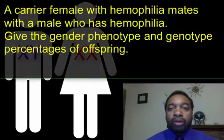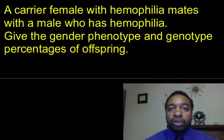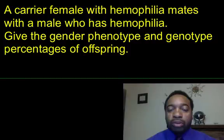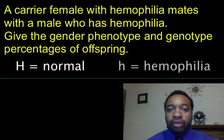A carrier female for hemophilia mates with a male who has hemophilia. Give the gender, phenotypic, and genotypic percentages. We're going to set up our key as normal. Since hemophilia is a recessive disease, we're going to say that big H is normal and little h is hemophilia.